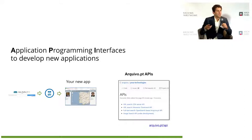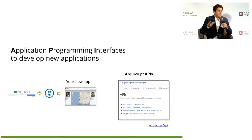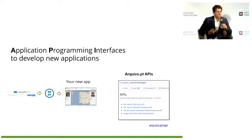We also provide, for interoperability, the Memento API — which is an international protocol — and the CDX Server API, which is not an international protocol but is widely supported by most web archives. This way our archive can interoperate with other web archives, and applications made for other web archives can be applied to ours. This is a very useful way of developing things.